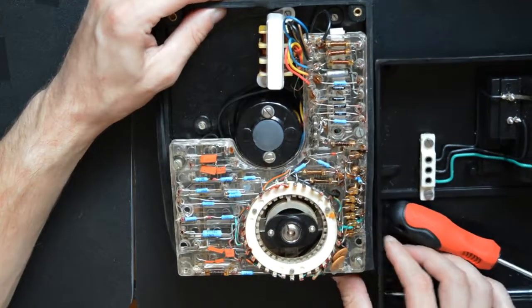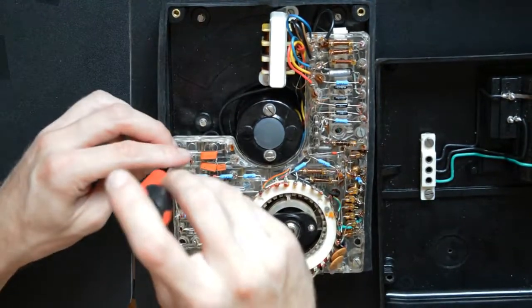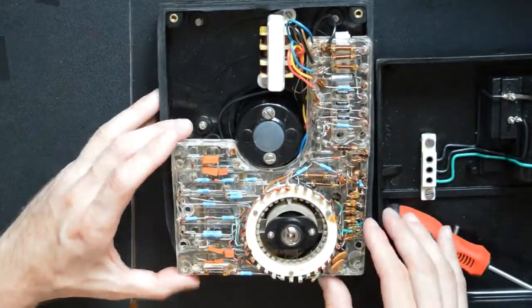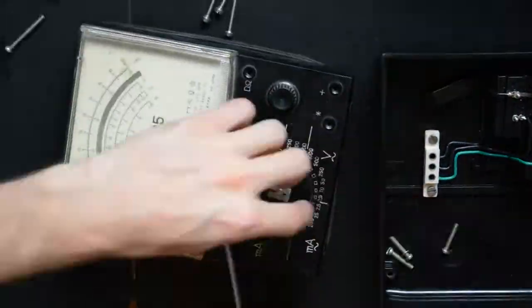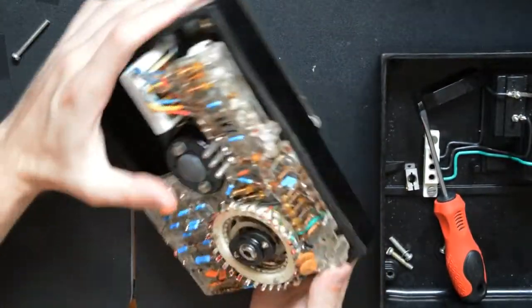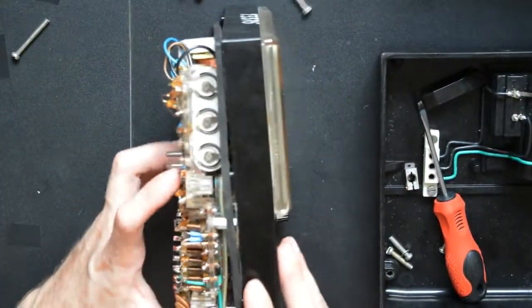Okay, let's see if we can take this thing apart a bit and see what's inside it. Now, finally, we can open up the multimeter. Let's see what's inside.